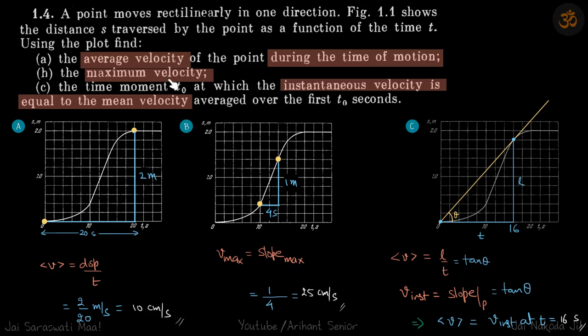Second, we need to find the maximum velocity, which means the slope of this displacement-time graph should be maximum, and we can see that happens here. So this distance is 1 meter, the time taken is 4 seconds. So this slope will be 1 by 4, which is 25 centimeters per second.